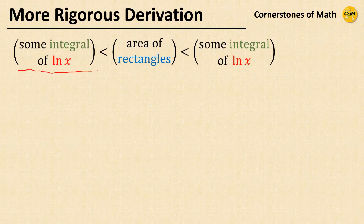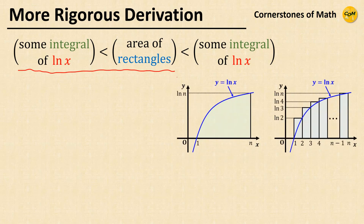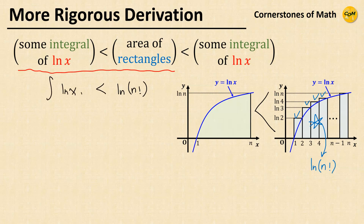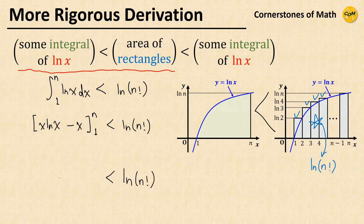First, let's obtain the lower bound of the inequality. Using the same graphs and rectangles, if we construct rectangles above the curve, then the total area of the rectangles is ln(n!), and this area is bigger than the area under the curve. So we have: ln(n!) > integral of ln(x) from 1 to n. Calculating the integral, we obtain ln(n!) > n·ln(n) - n + 1.